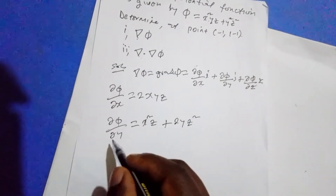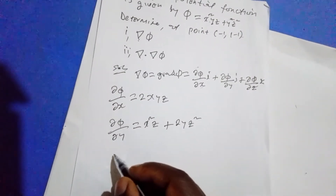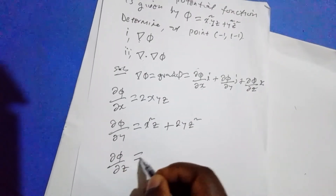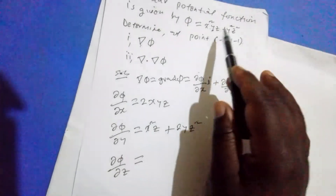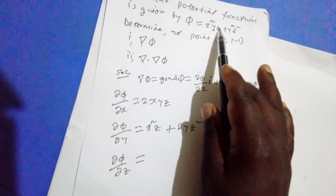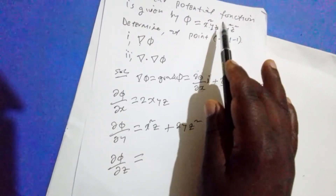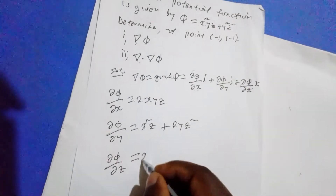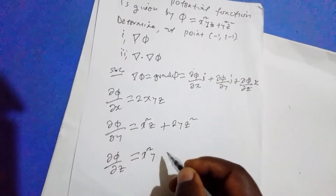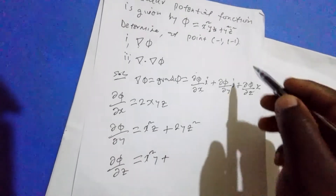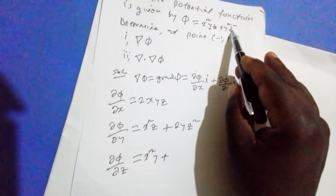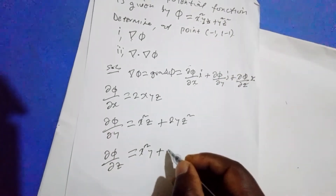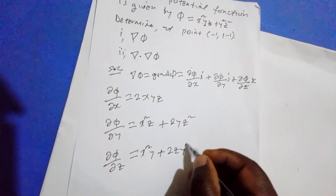Del phi del z: differentiating z from the first term gives 1, times y times x squared, so we get x squared y. Plus, differentiating z squared from the second term gives 2z times y squared, so we get 2zy squared. Therefore del phi del z equals x squared y plus 2zy squared.